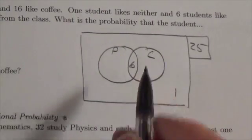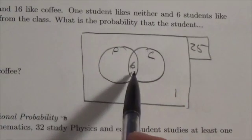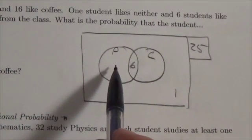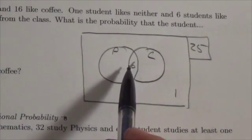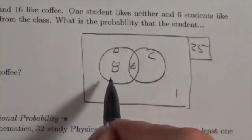If 14 like pizza, because there are two subsections to the pizza set and 6 are in the overlap, there's supposed to be 14 total. That means there's going to be 8 who just like pizza.